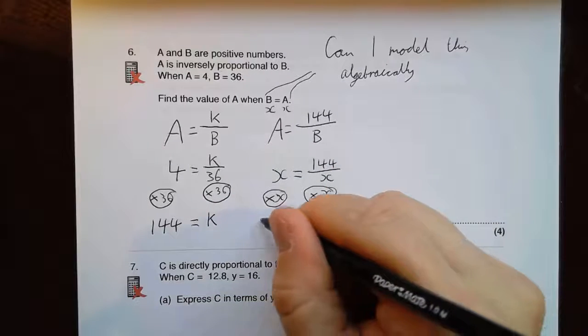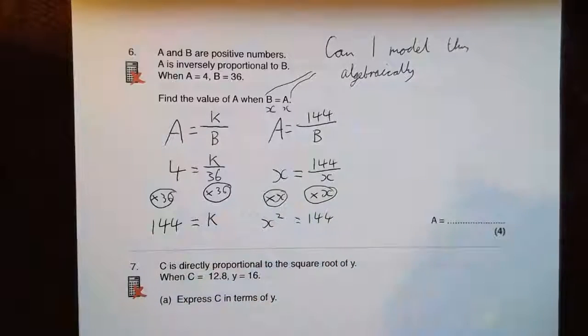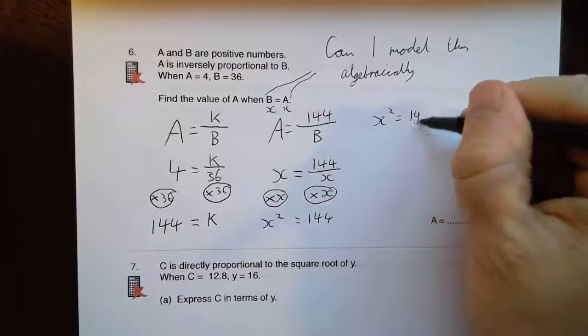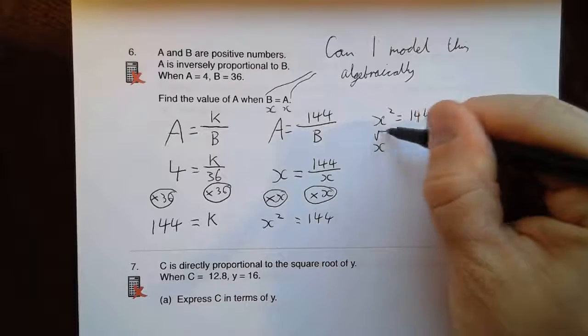Yeah. So that gives me x squared equals 144. If x squared equals 144, then x must be equal to the square root of that.